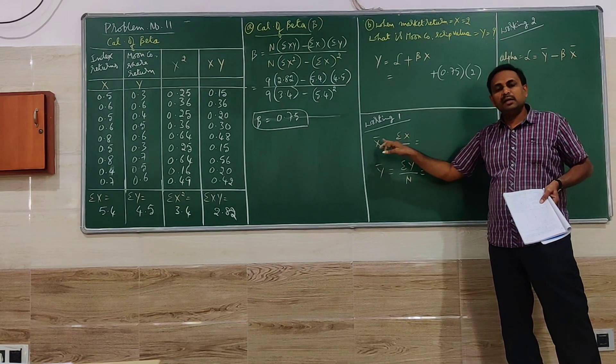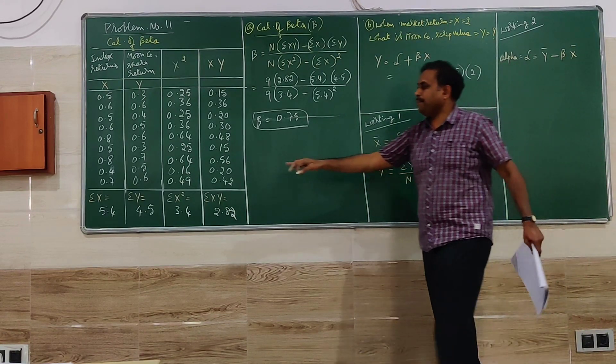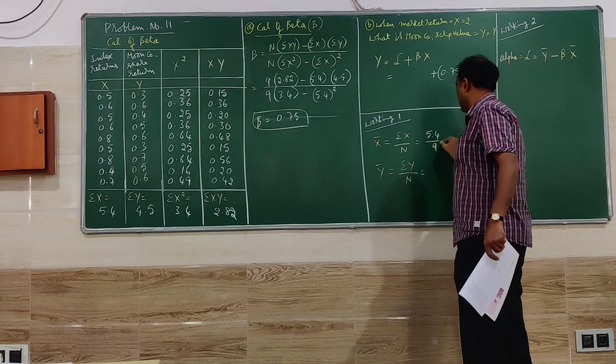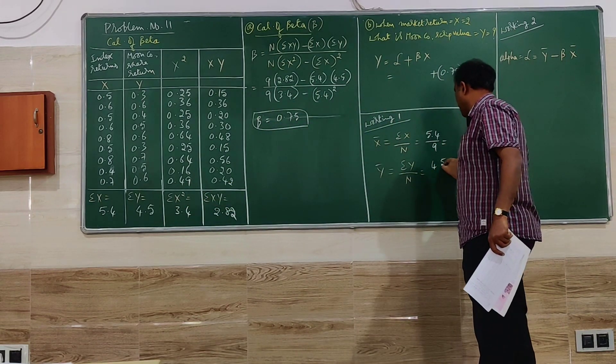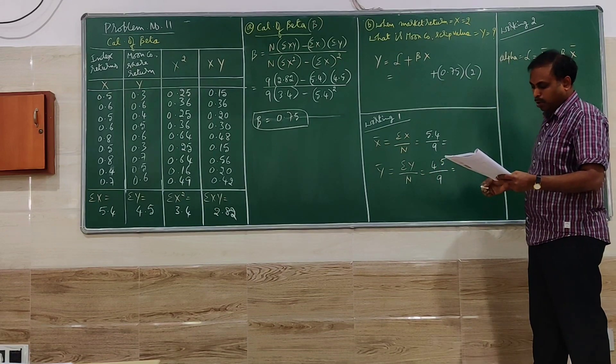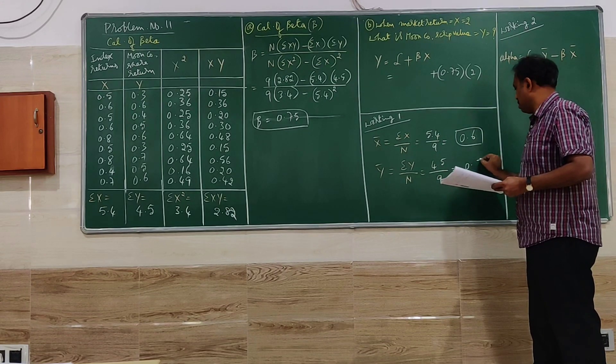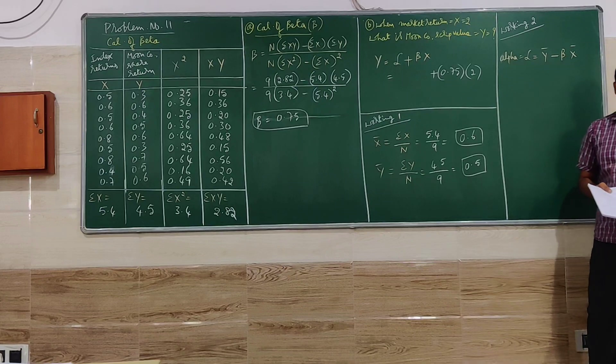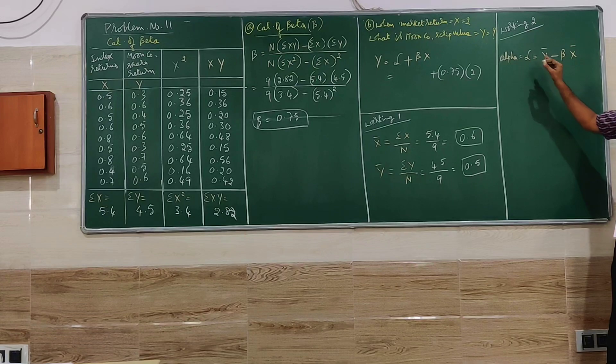First working is X bar and Y bar. Summation X divided by N, so 5.4 divided by 9. Then summation Y, 4.5 divided by 9. So here you are going to get 0.6 and 0.5. You will be wondering why we have done X bar and Y bar. X bar and Y bar is required for calculation of alpha.